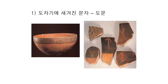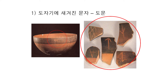여기까지는 신화와 전설이고요. 우리가 눈으로 볼 수 있는 유물을 통해 확인할 수 있는 첫 번째는 도자기에 새겨진 문자입니다. 그래서 도문이라고 얘기합니다. 지금 그림에 보면 그릇의 주둥이 부분에 글자 비슷한 무언가가 하나씩 새겨져 있어요. 이때 도는 도자기라는 것이죠.